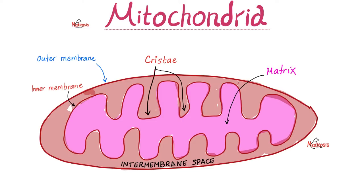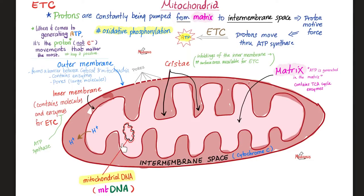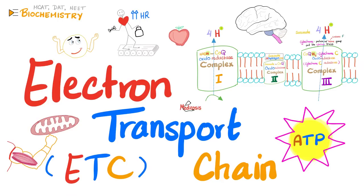And what's the inner filling? The matrix. That's your mitochondrial DNA, abbreviated MT-DNA. The normal function of your mitochondrion is to make energy — lots of ATP — because of oxidative phosphorylation in the electron transport chain.